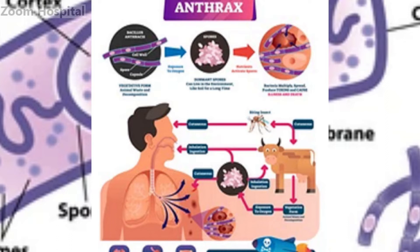Symptoms, Transmission, and Effective Prevention Measures. Although relatively rare, anthrax poses a significant threat to both humans and animals. The symptoms of anthrax can vary depending on the route of exposure, which includes cutaneous, inhalation, and gastrointestinal.